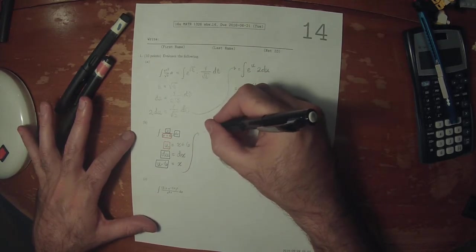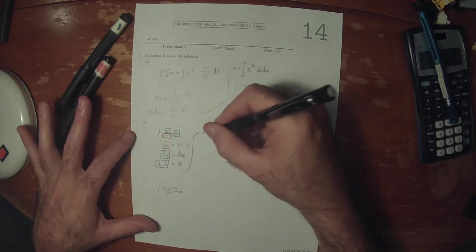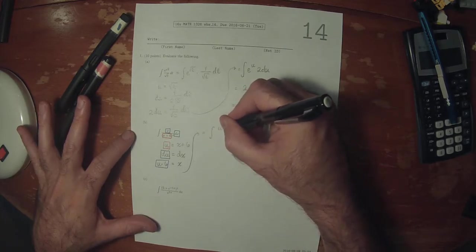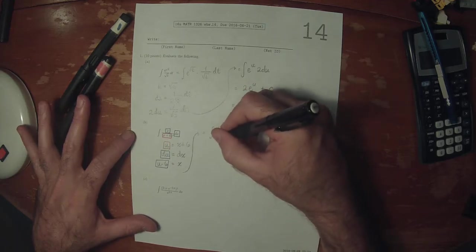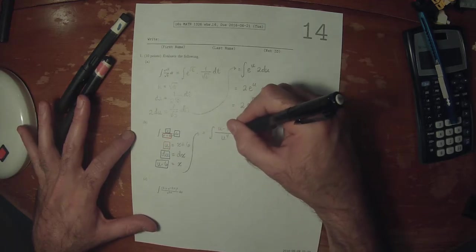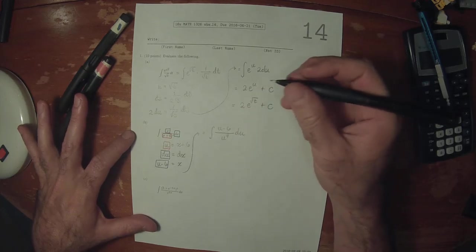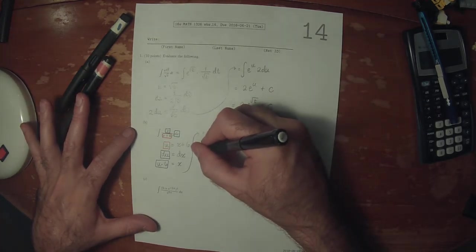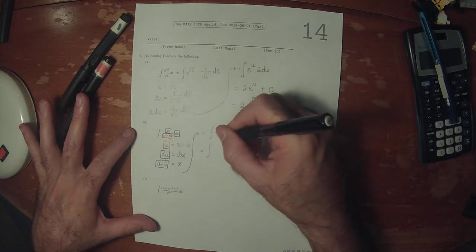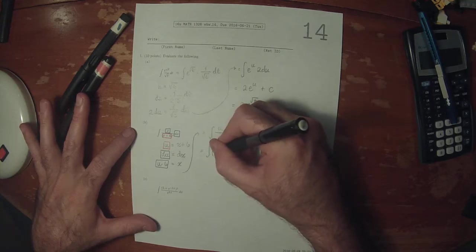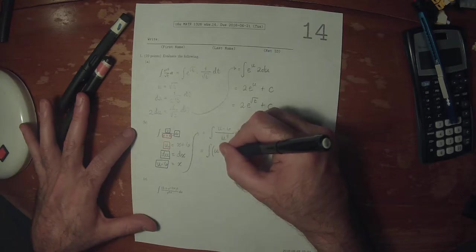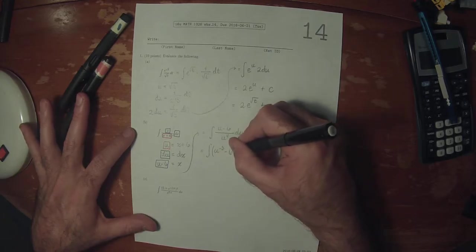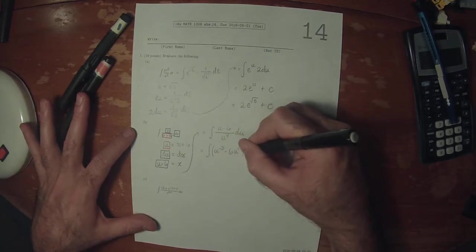u to negative 4 du. Now some algebraic simplification. This would be u to negative 3 minus 6, u to negative 4 du.